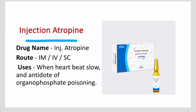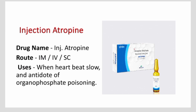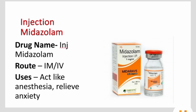Atropine can be given intramuscularly, intravenously, and also subcutaneously. Its uses are when the heartbeat is slow (bradycardia) and as an antidote for organophosphate poisoning. The next one is injection midazolam, and its drug route is IM or IV.